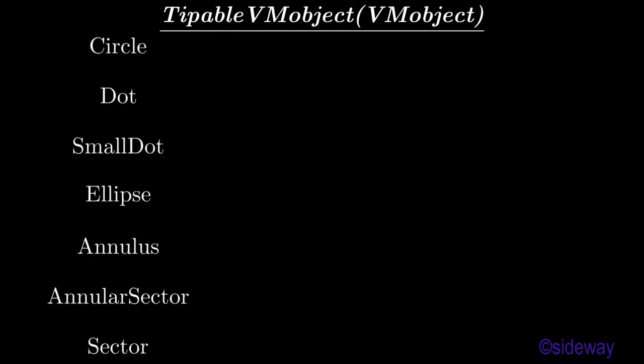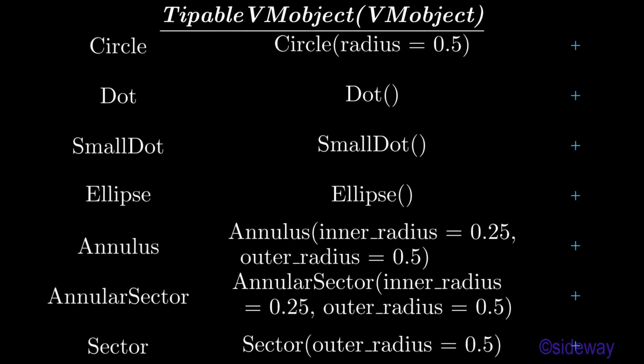Some other typical tipable beam objects are: circle, dot, small dot, ellipse, annulus, annular sector, and sector.